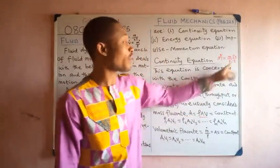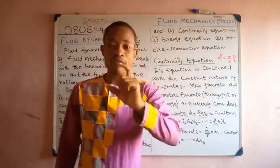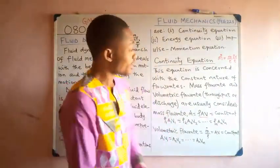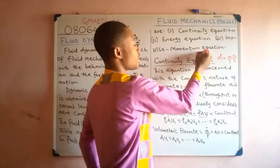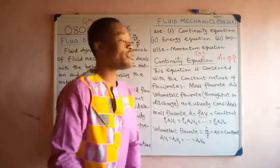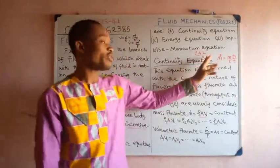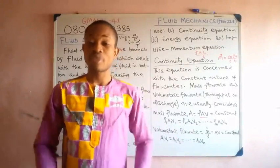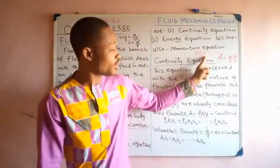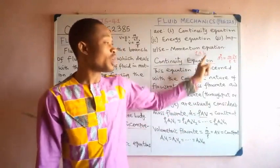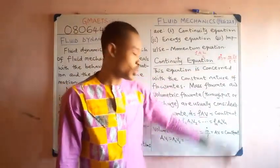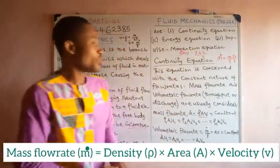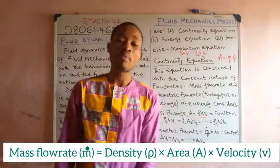Since mass is density times volume, and volume is area times length, this equation becomes density times area times length divided by time as your mass flow rate. Length over time, from the knowledge of motion, is velocity. So this L/T becomes V (velocity), not V for volume. Working on that gives us ṁ = ρAV, where V is velocity.